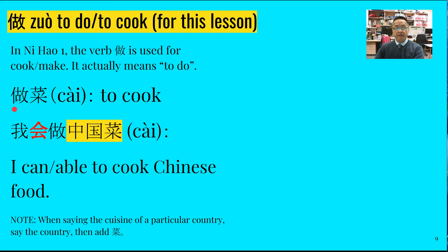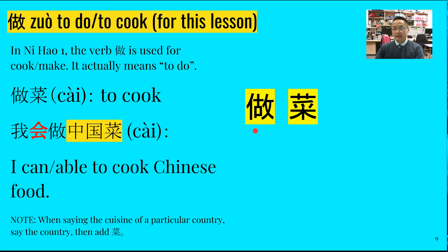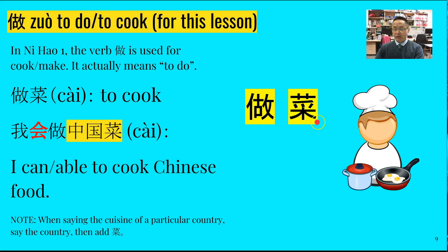Alright, now here we've got our first word: 做菜. Notice here the person radical and some other bits of the Chinese character that we've had before. When the Chinese say they're going to cook or they can cook, the verb is 做, and all you need to add behind that for 'to cook' is 菜 — 做菜. 菜 means dish. Once more: 做菜.